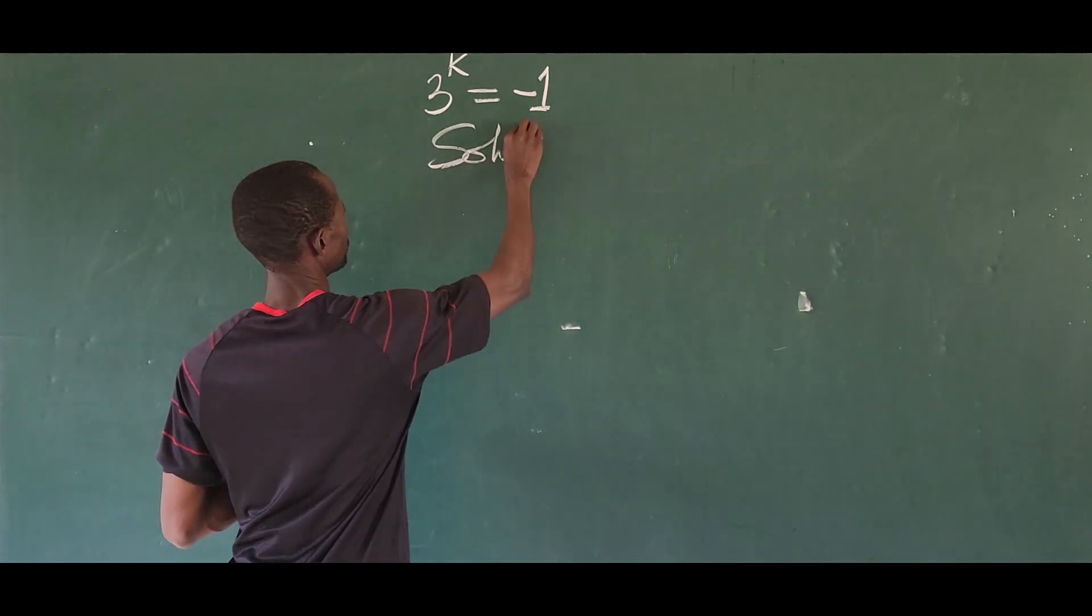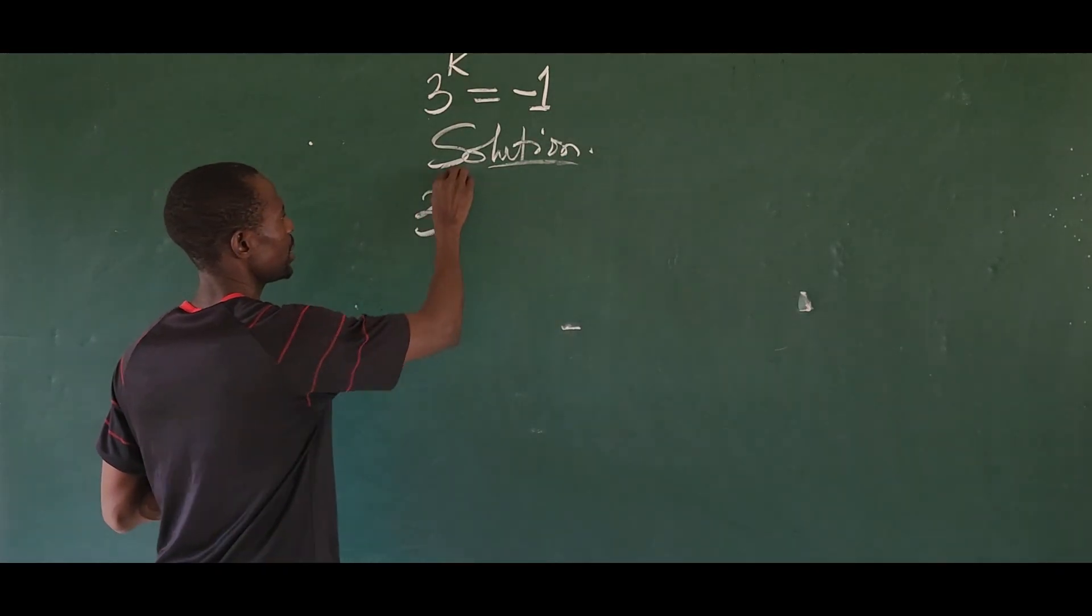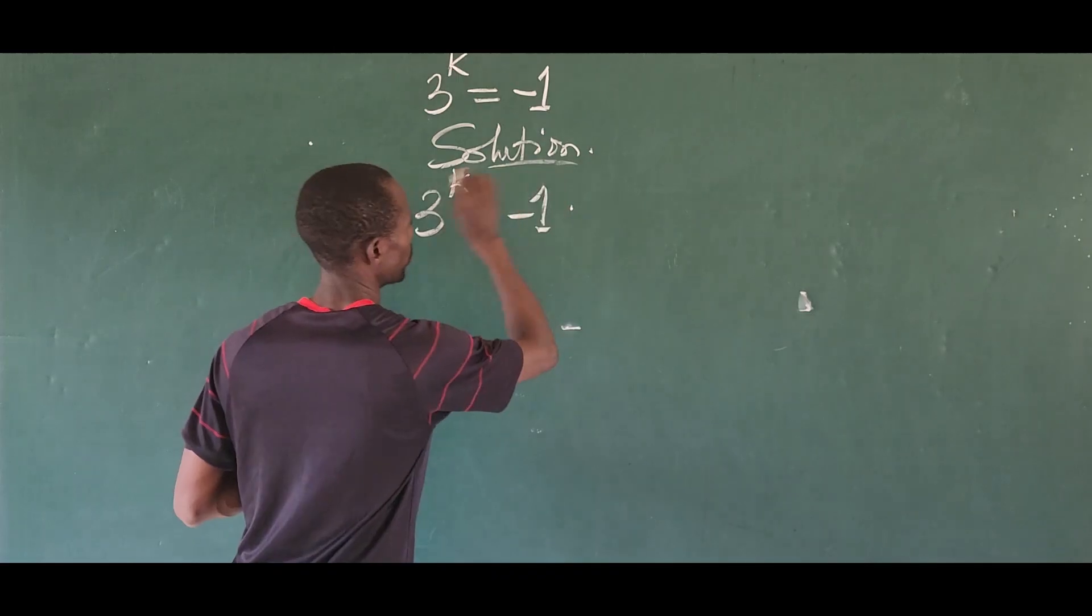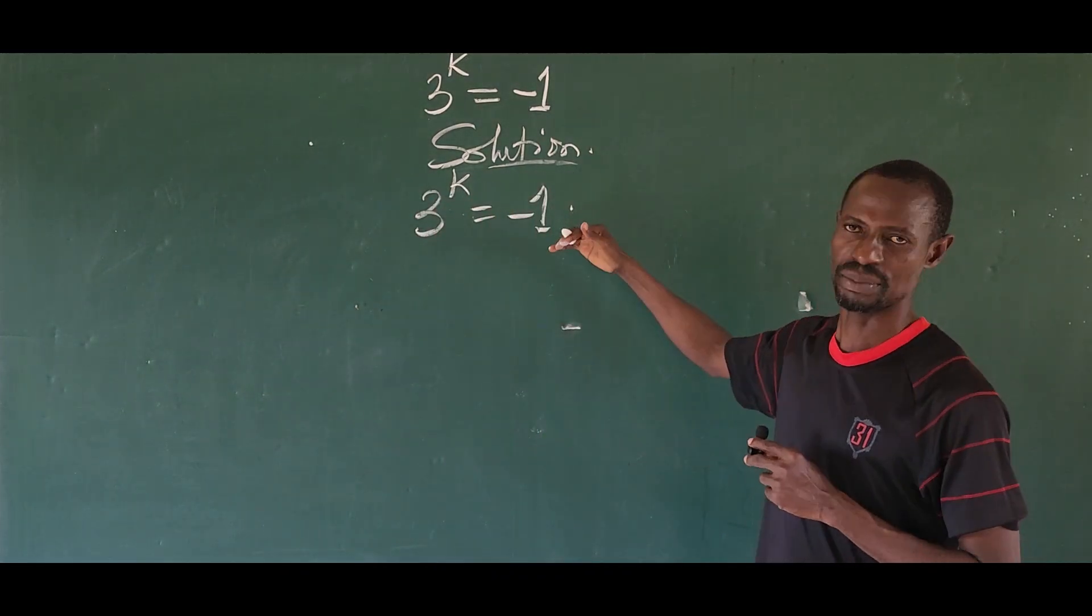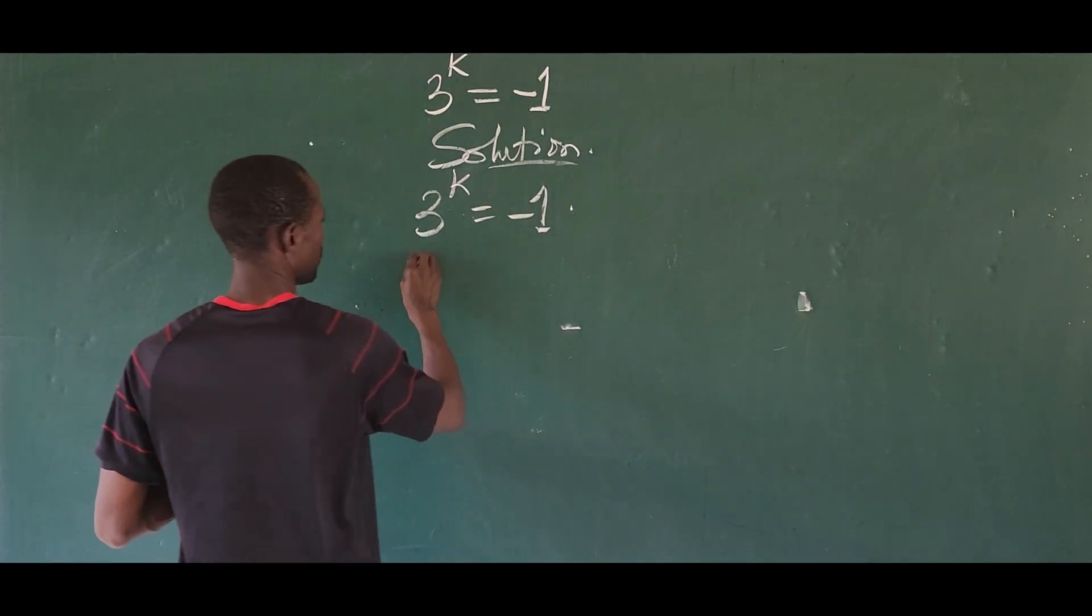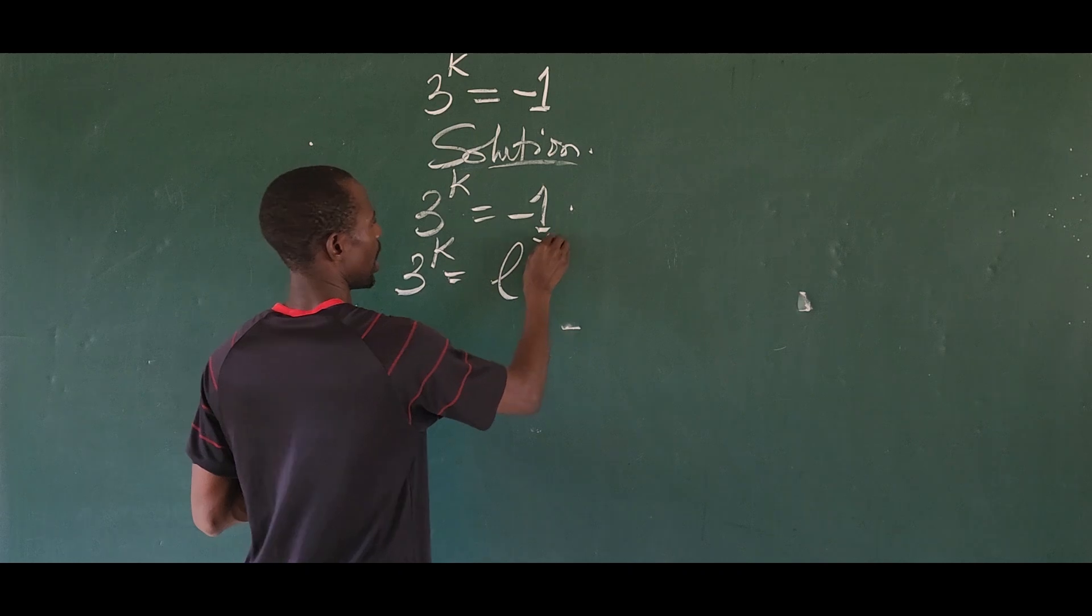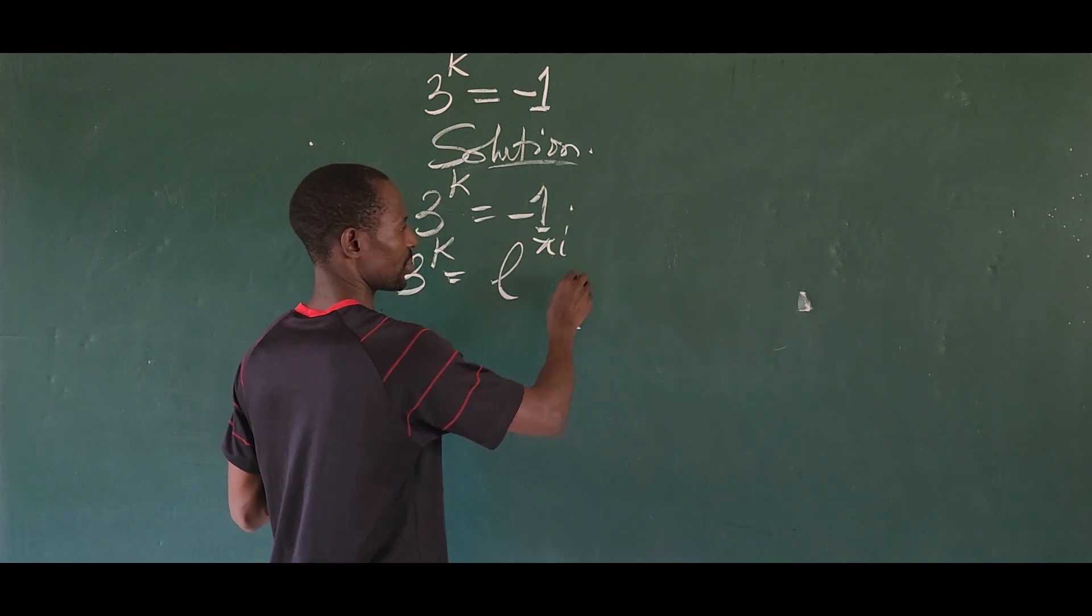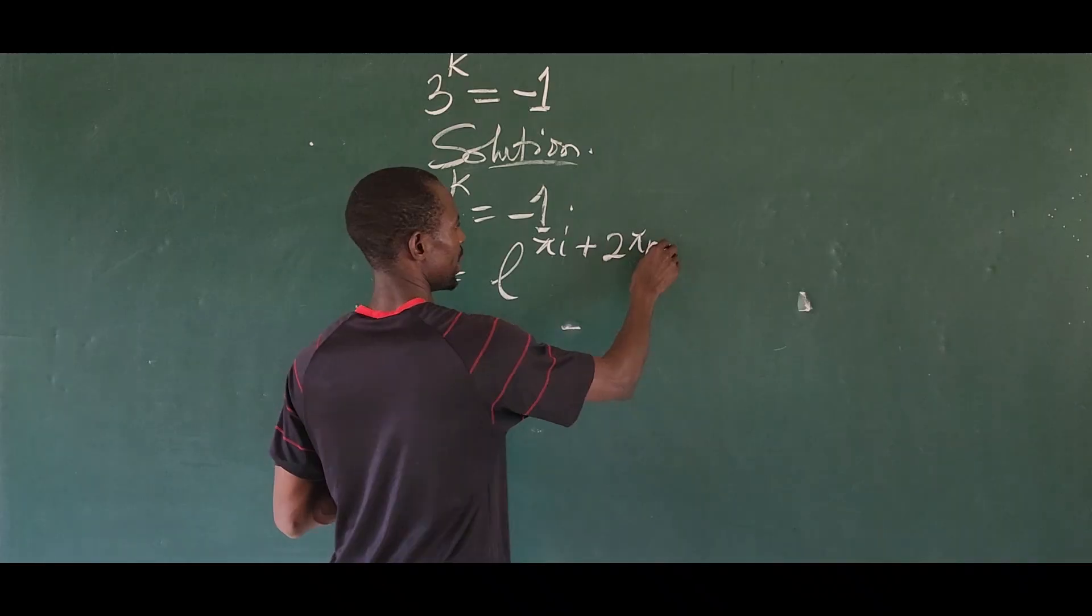So we have a solution. So we know that the question is 3 to the power of k equal to minus 1. All we just have to take note of is that minus 1 can be written in another format. So we know that minus 1 can be written as e to the power of pi i plus 2 pi n i.